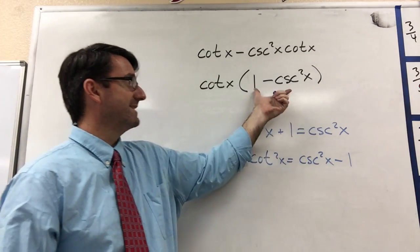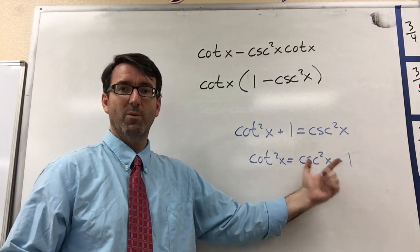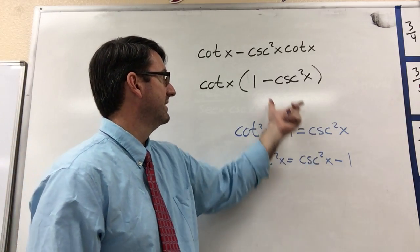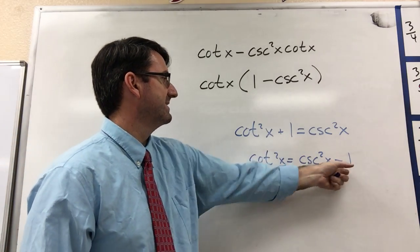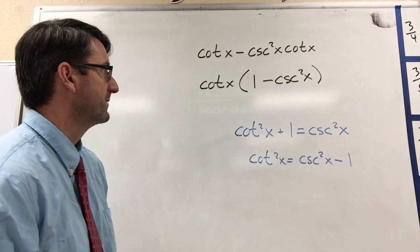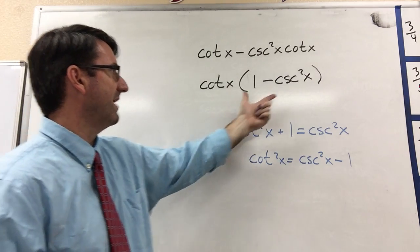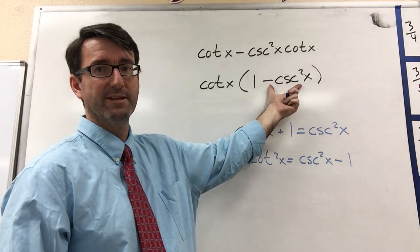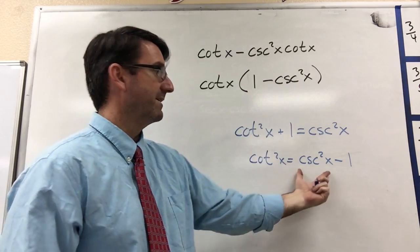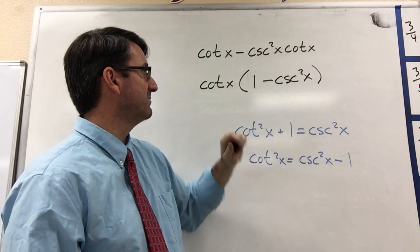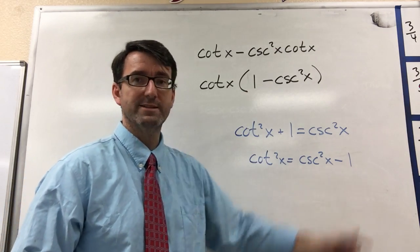So notice that this isn't exactly what we want, or at least this isn't the identity that gives us cotangent squared. But notice what we do have. We have all the elements here. It's just that up here, our cosecant squared is negative. Down here, it's positive. Up here, our 1 is positive. Down here, our 1 is negative.